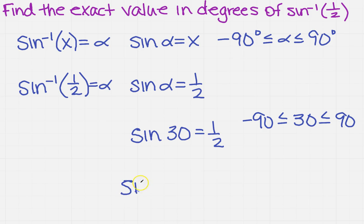So then that means the answer for the sine of negative 1, or the inverse of 1 half, is 30 degrees.